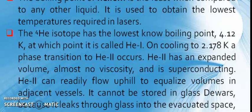Helium isotopes. You know, the 4He isotope has the lowest known boiling point, 4.12 K, at which point it is called He-I. On cooling to 2.178 Kelvin, a phase transition to He-II occurs. He-II has an expanded volume, almost no viscosity, and is superconducting. He-II can readily flow uphill to equalize volumes in adjacent vessels. It cannot be stored in glass Dewars because it leaks through glass into the evacuated space. So at 0 Kelvin, 3He flows on 4He, permitting separation of the isotopes.